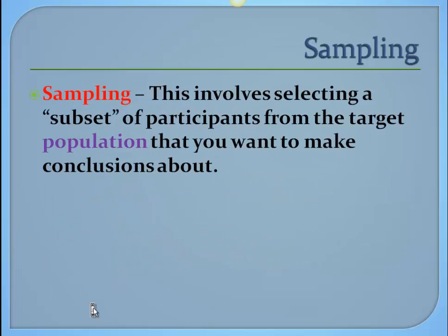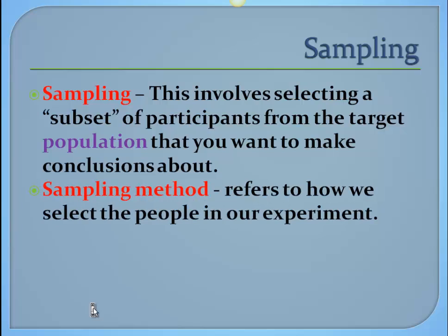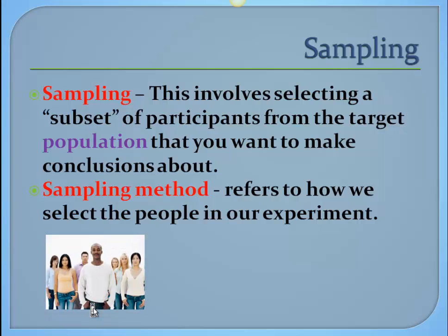Sampling involves selecting a subset of participants from your target population that you want to make conclusions about. When you're operationalizing and describing your study, you'll talk about the population, what group of people this is, and how you systematically choose your sample. Sampling method refers to that technique or system — how we take a population of, say, 3,000 middle school and high school students and select a few subjects from that group to be in our sample.